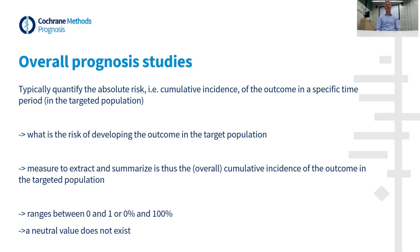For overall prognosis studies, there is typically one measure of specific interest, which is the absolute risk of the outcome in a specific time period in the targeted population. In other words, it is the incidence of the outcome within a pre-specified time period in that population. The cumulative incidence is an absolute outcome risk estimate, so it has a value between 0 and 1, or between 0% and 100%. Note that the absolute risk does not have a neutral value.